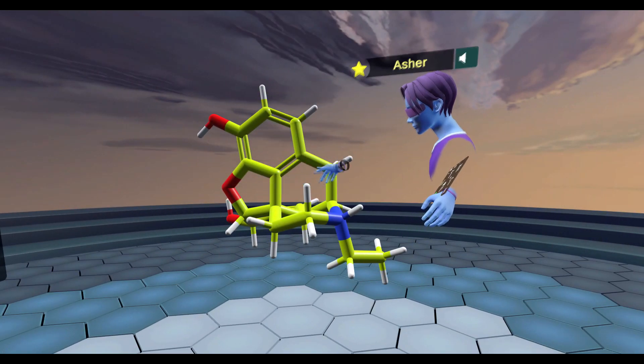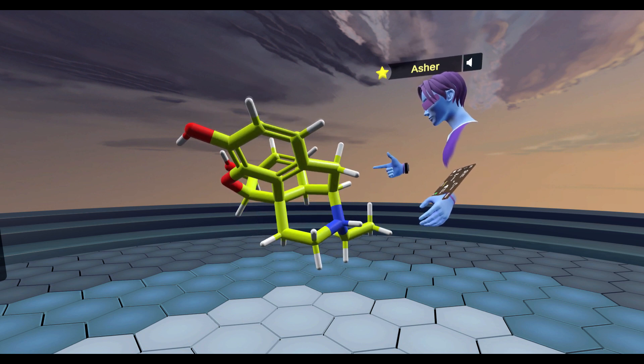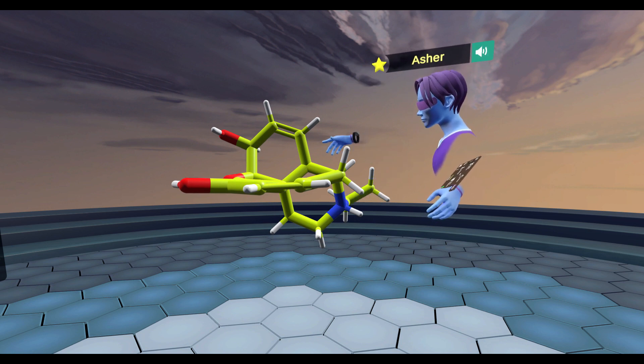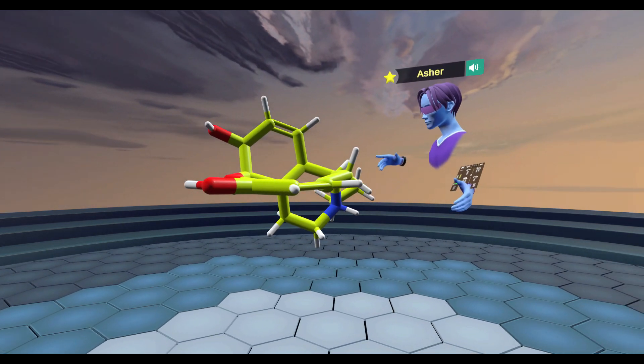And then if we were to flip the structure like this, we would actually see there's two more rings. There's one right here and one right here for a total of five different ring structures in the compound morphine.